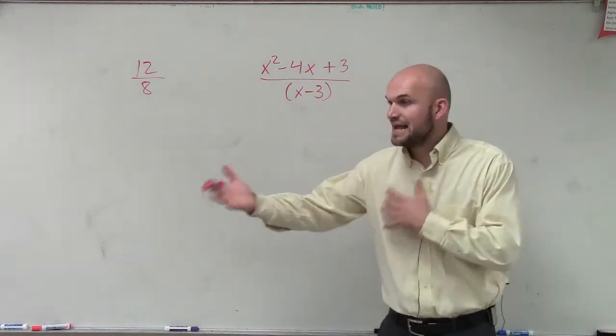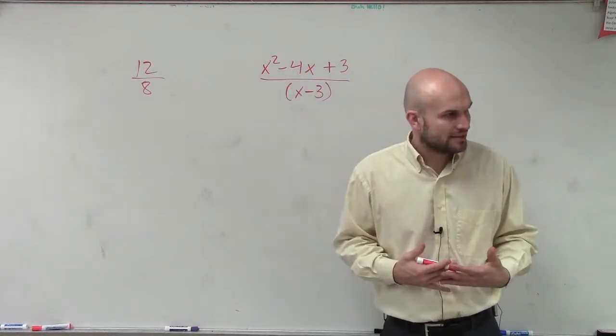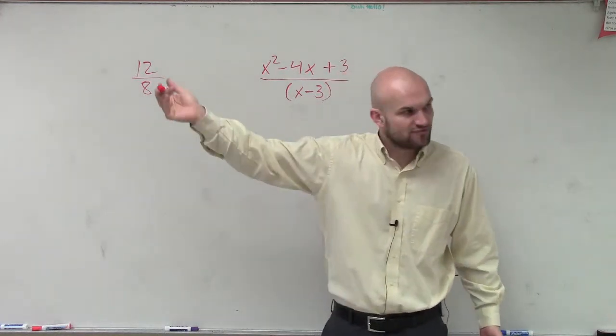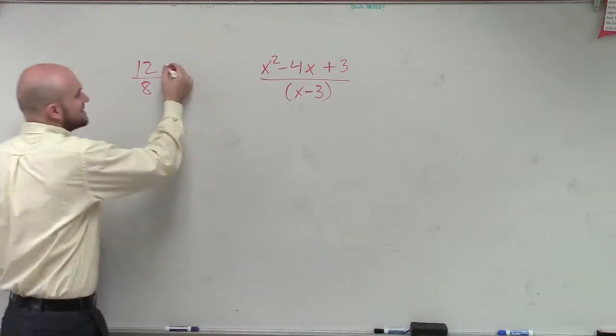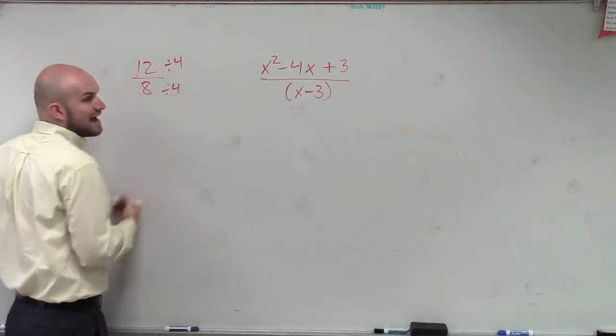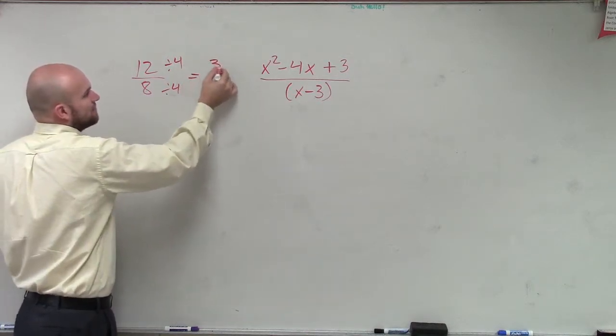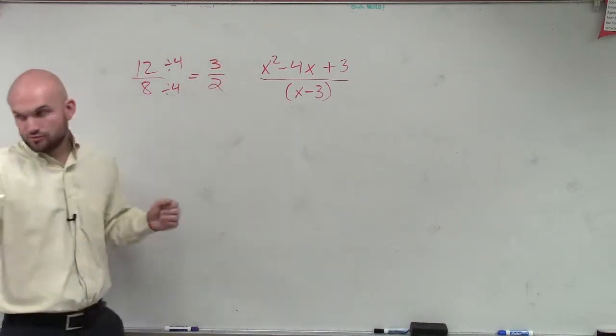Okay. Yeah, you're taking out what they have in common, right? We know that the top and the bottom both share a 4. So, what we're doing is we're essentially dividing out its common factor. Since they both can be divided by 4, we get an answer of 3 over 2, which is 1 and a half.